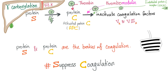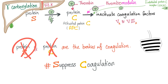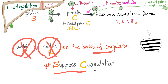Protein S and C are the brakes — the inhibitors of coagulation. Warfarin will inhibit protein S and protein C before it inhibits factors 2, 7, 9, and 10. When you inhibit the anticoagulants first, you become pro-coagulant — hence warfarin-induced skin necrosis or thrombosis.